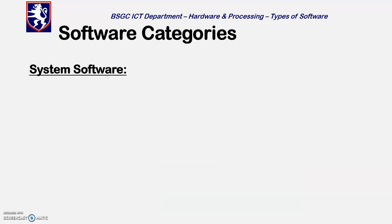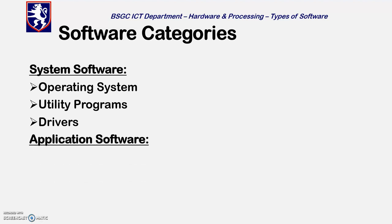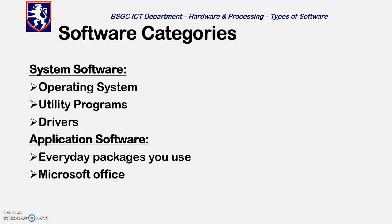These are the software categories. We've got operating systems, utility programs, and drivers — that's your system software. Then we've got application software. Systems and application: everyday packages you use, like Microsoft Office. Your system software includes your operating system, which would be something like Windows, iOS, or Android. Utility programs are programs such as your antivirus software. And drivers are the software that allows you to use things like your keyboard, your mouse, and your printers. For application software, you've also got your web browsing software such as Google Chrome, Firefox, and Explorer.